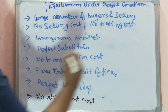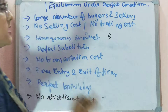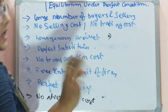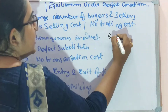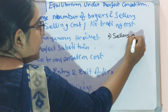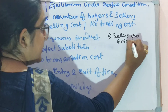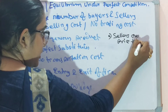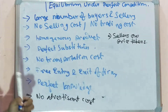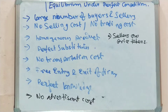Definitely, the sellers are not the price makers — they are the price takers. So we can write that sellers are price takers. These are the characteristics of the perfect competitive market.